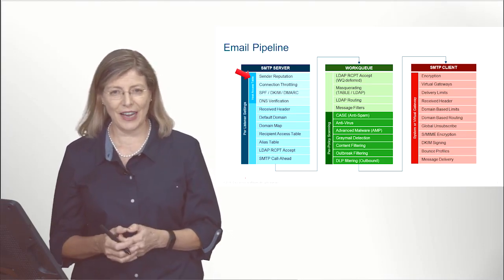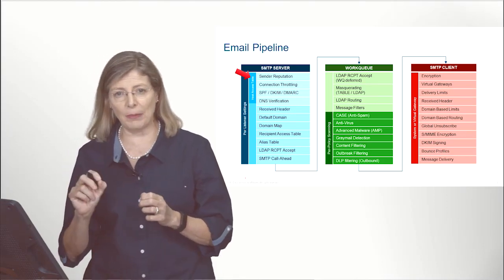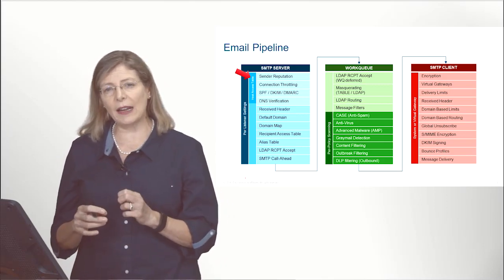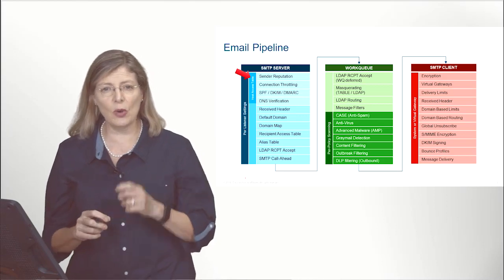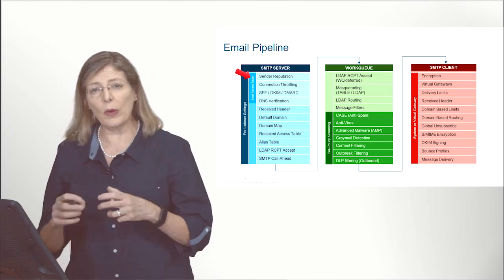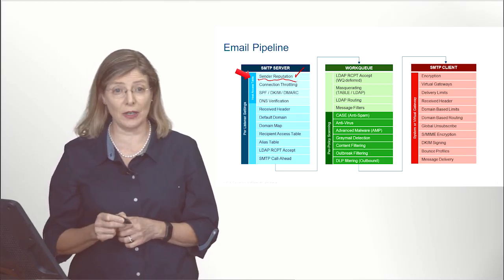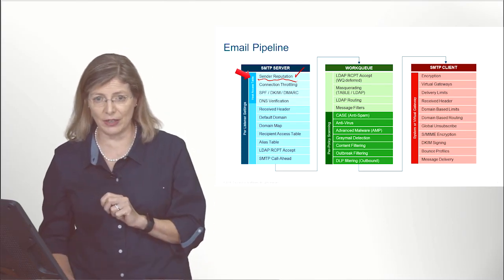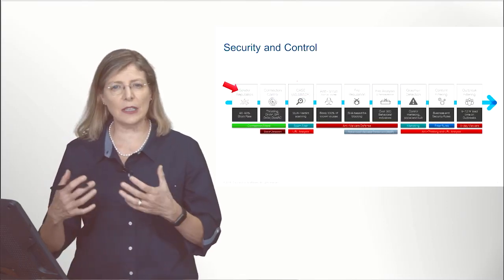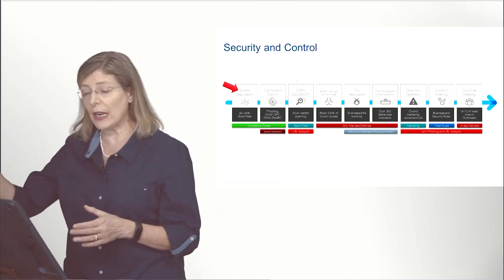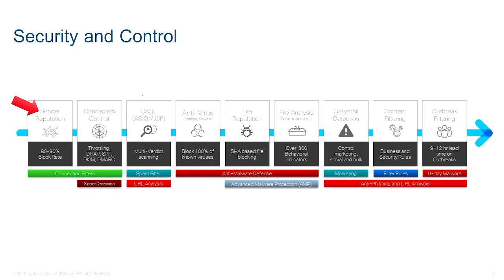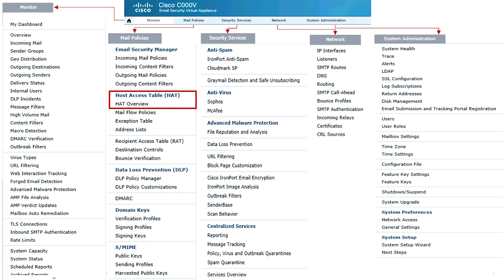You'll recognize the pipeline — I'm going to use it on almost every recording. The portion of the email pipeline we're going to tackle has been regrouped into the Host Access Table. What we want to deal with is mainly sender reputation, which is part of the security and control section. We see all the hoops that our email will need to go through to eventually be accepted and delivered to our users.